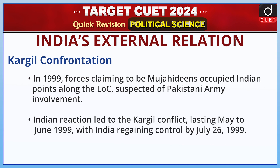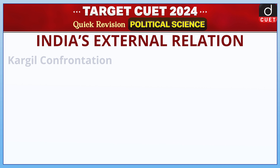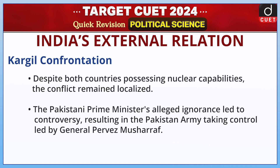Kargil Confrontation: In 1999, forces claiming to be Mujahideen occupied Indian points along the LOC, suspected of Pakistani army involvement. The Indian reaction led to the Kargil conflict, lasting May to June 1999, with India regaining control by July 26, 1999. Despite both countries possessing nuclear capabilities, the conflict remained localized. The Pakistani Prime Minister's alleged ignorance led to controversy, resulting in the Pakistan army taking control, led by General Pervez Musharraf.